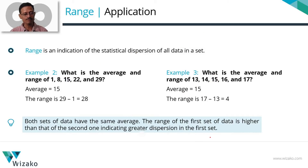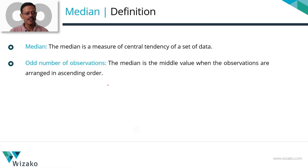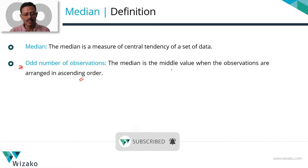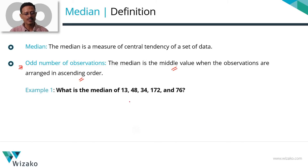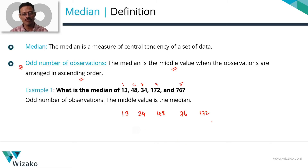Having done range, let's move on to median. Median is a measure of the central tendency for a set of data. Computing median is slightly different for two scenarios. Scenario 1: if you have an odd number of observations, write the numbers in ascending order, then pick the middle value — that gives you the median. For example, with five numbers written in ascending order as 13, 34, 48, 76, and 172, the middle number — the third from the left — is 48. So 48 is the median for this set of data.